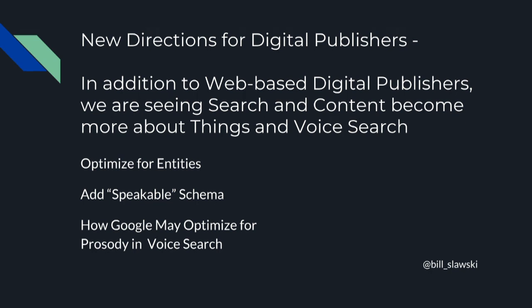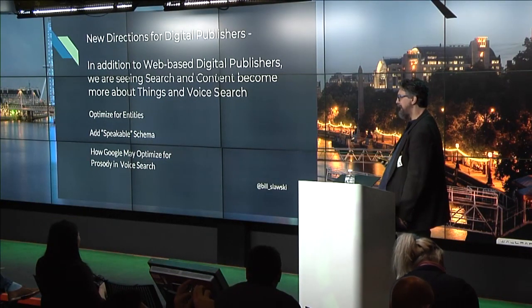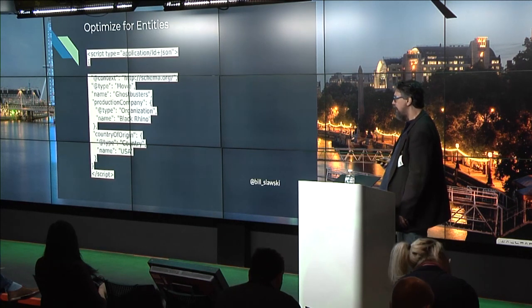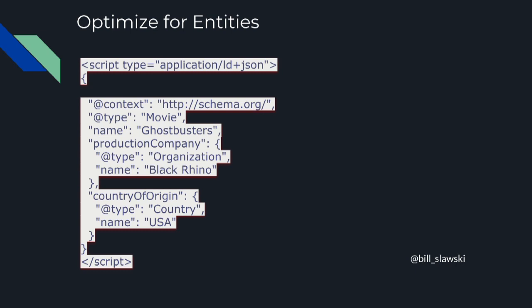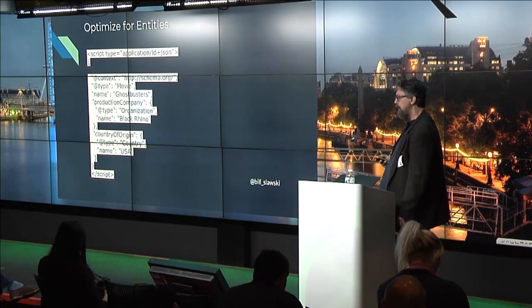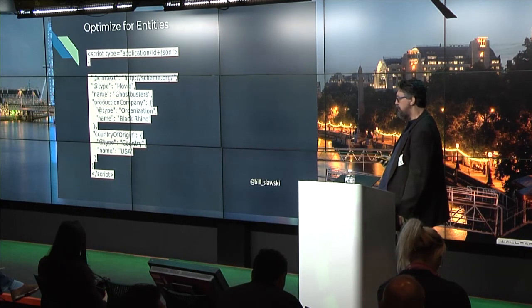Speakable schema determines whether that answer is what gets read to people. There are things you can optimize for when you write answers that get spoken — like prosody, which determines where pauses take place in your answers, or whether you emphasize certain words. Google does some machine learning automating that. But if you're not using JSON-LD on your pages to mark up schema — like Wikipedia would write articles about entities but didn't have schema saying these are the entities, this is the main entity of this page — that's something they should be doing.